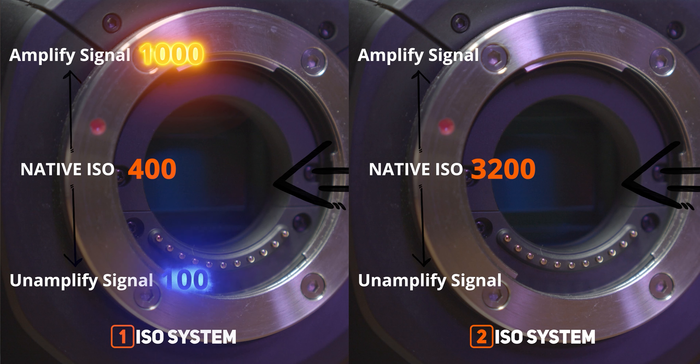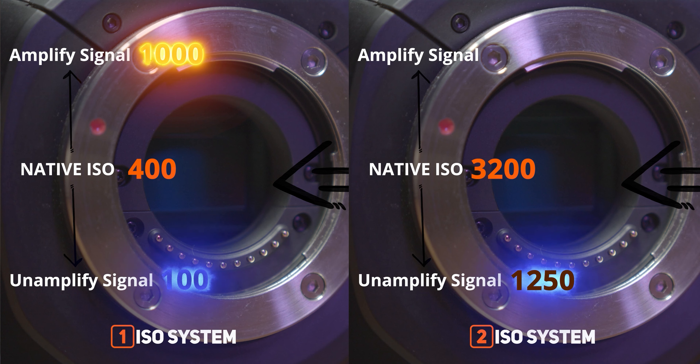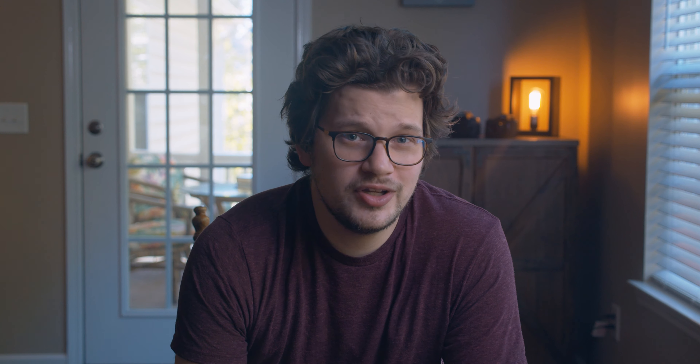Dual ISO basically gives you a secondary baseline to choose from when adjusting the exposure of your camera. In the case of the BMPCC 4K, your native ISO is set at 400 and 3200. The first ISO system will go from 100 to 1000 ISO before kicking in the second ISO system at 1250 ISO.